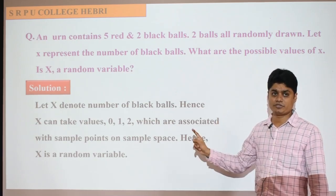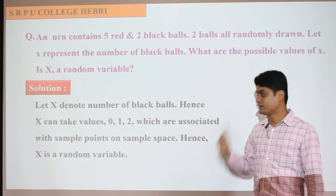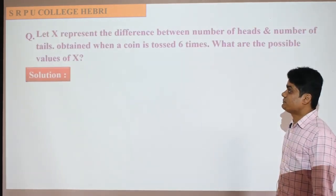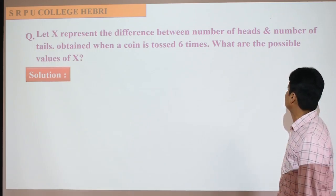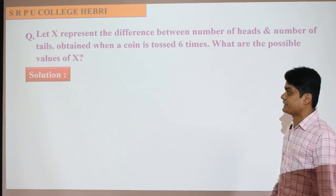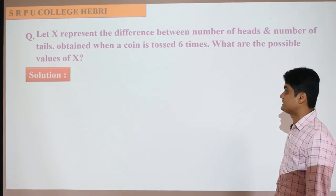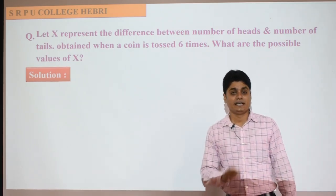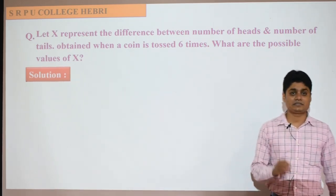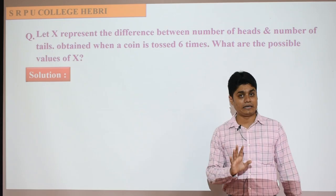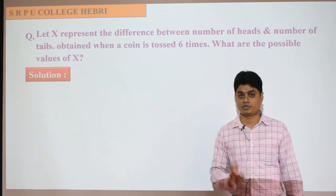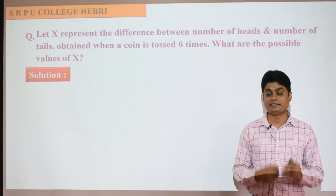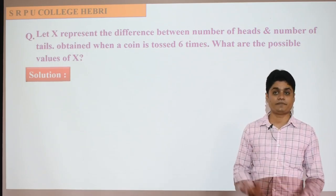Note: they did not ask to find the probability distribution here. Read the question carefully. Since they only ask for the possible values of x and whether x is a random variable, just write the elements of x and conclude whether it is a random variable or not. There is no need to write probabilities.